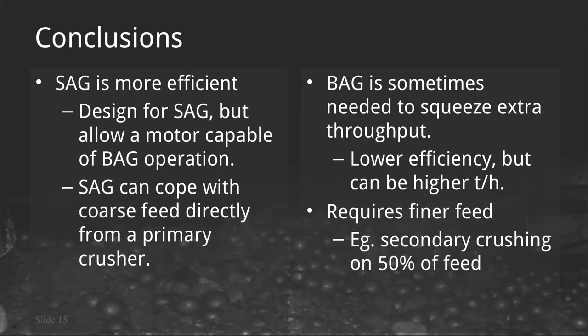In conclusions: SAG mills are more efficient and are what you should be designing. But as a designer it's a good idea to ensure operators have a motor capable of barely autogenous operation — perhaps 18% to 20% ball charge. Design the mill to operate efficiently as a SAG operation, but allow it to run as a BAG mill in case the operator needs that extra capability, extra throughput, or extra power draw at some point in the future.